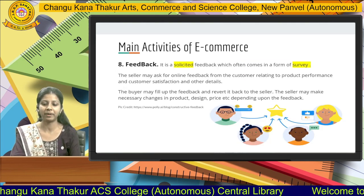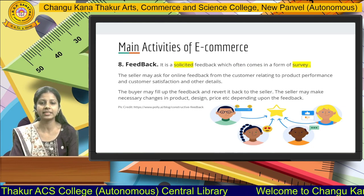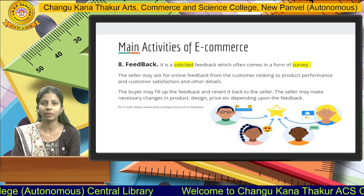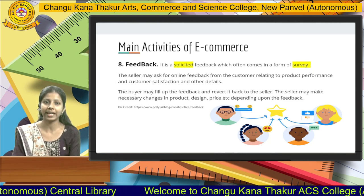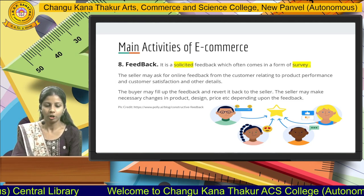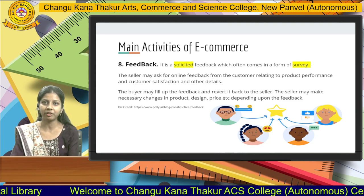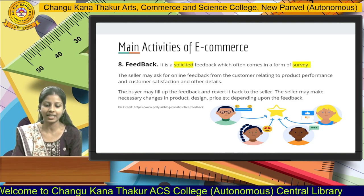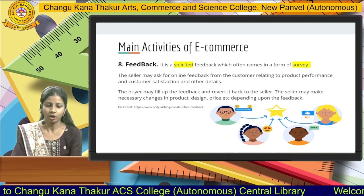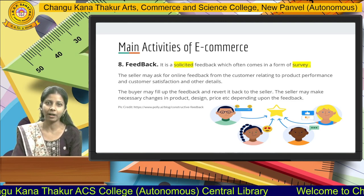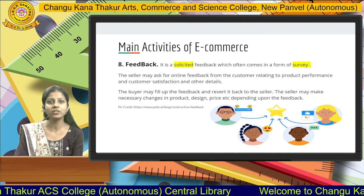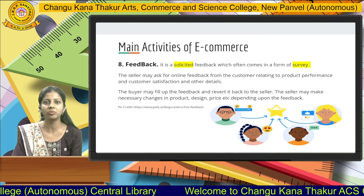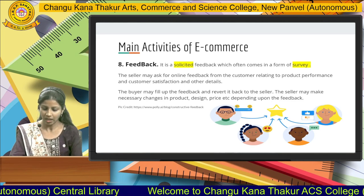Then, we have feedback. Feedback is a solicited form of survey — solicited means a pre-structured questionnaire is built to take a survey from respondents. The seller may ask for online feedback from customers relating to product performance, customer satisfaction, and other details. The buyer has to fill in the feedback form, or otherwise in an unsolicited way — like star ratings or reviews — posted by customers for the e-commerce website holders.